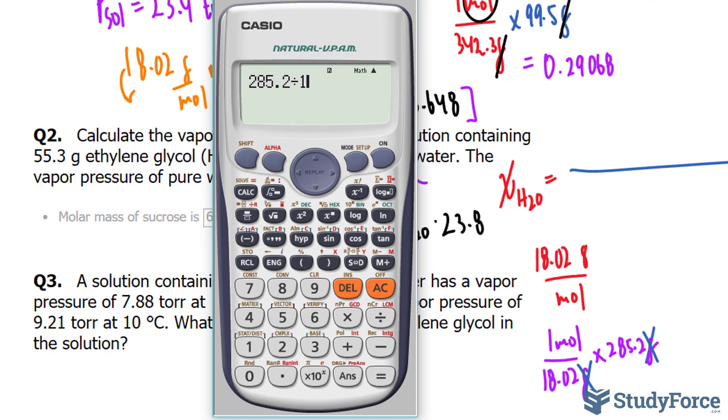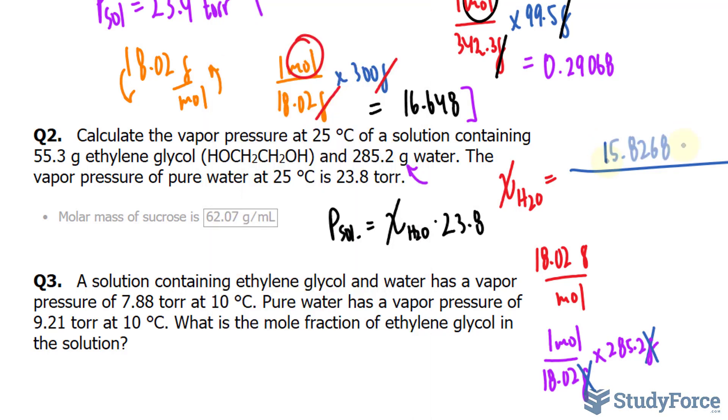285.2 divided by 18.02, and that's 15.8268. That's the number of moles of water, I'll write it down again underneath.